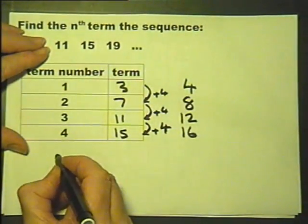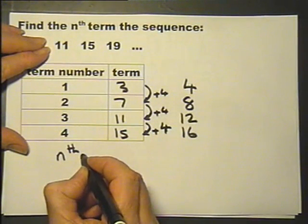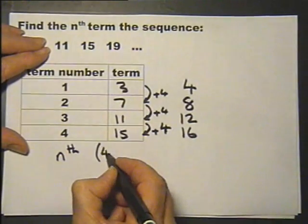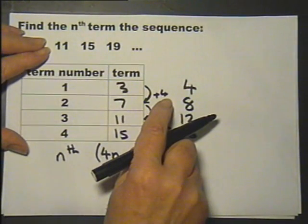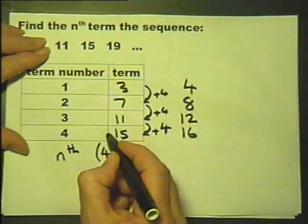So in other words, the nth term, or any term you want to find, if you multiply it by 4, the term to term value, and then subtract 1, it will work out the term.